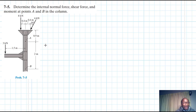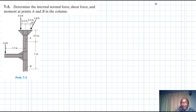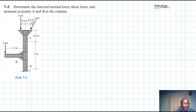Welcome to this screencast. The problem asks us to determine the internal normal force, shear force, and moments at points A and B in the column. This problem comes from the Engineering Mechanics Statics textbook, 13th edition by RC Hibbeler. We have a column with a section just below B, and a beam connected to the column at that point.